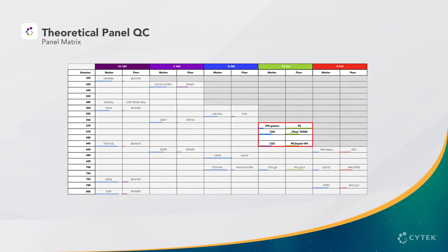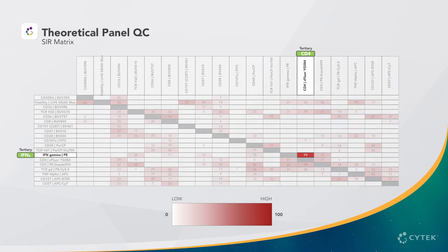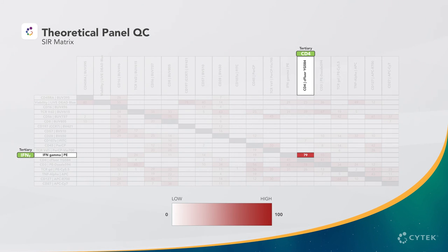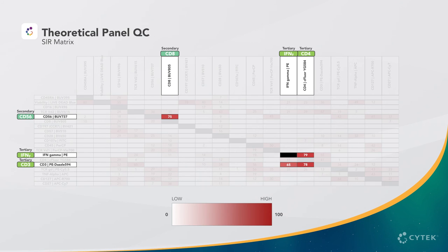We can see that interferon-gamma on PE, CD4 on Seafloor YG584, and CD3 on PE-Dazzle 594 have very close emission peaks off the yellow-green laser, so let's examine them in detail. Looking at the SIR matrix, we can see that PE may impact the resolution of Seafloor YG584, while PE-Dazzle 594 might impact the resolution of PE and Seafloor YG584. We can also see that the SIR for BUV737 into BUV805 is relatively high. Recall that there are many factors that contribute to spread, so it is challenging to precisely predict if this combination will resolve all markers. It's up to us to decide if we want to change the panel to further minimize spread, or move forward with this panel and see how the data looks for the first iteration.